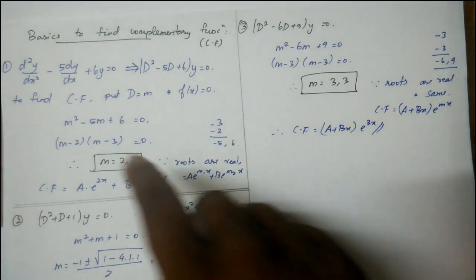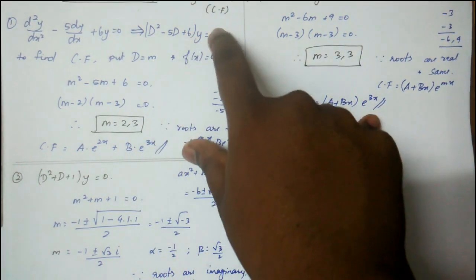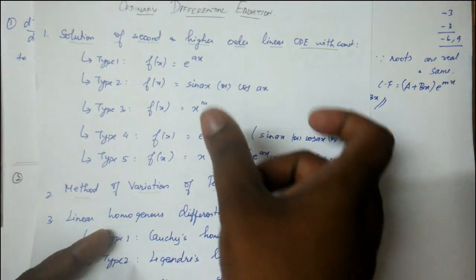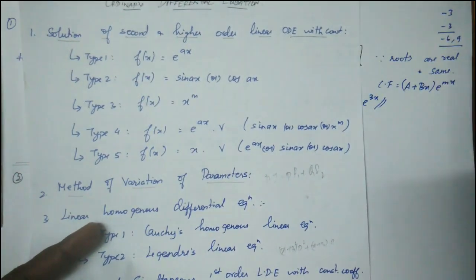For example, take d²y/dx² + 5dy/dx + 6y = e^3x. When the right side is e^3x or zero, find the complementary function.